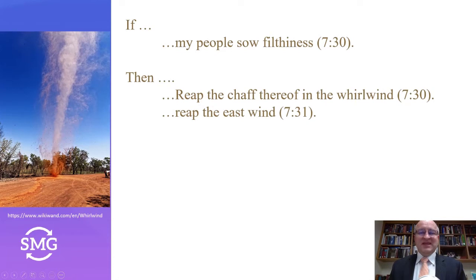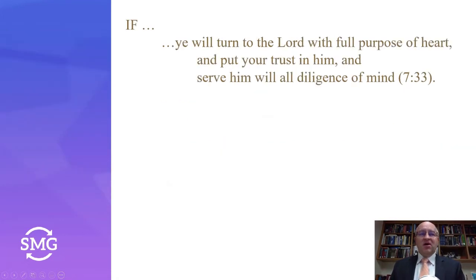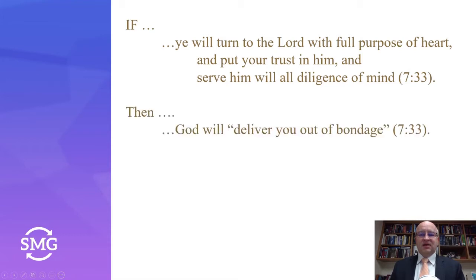You'll reap the east wind. East wind is very symbolic. To the Semites, the west wind brought rain, and the east wind brought drought, which meant starvation and death. So if you're going to reap the east wind, you're going to reap starvation and death — it's a bad thing. But also, if you will turn to the Lord with full purpose of heart, put your trust in him, serve him with all diligence of mind, then God will deliver you out of bondage.